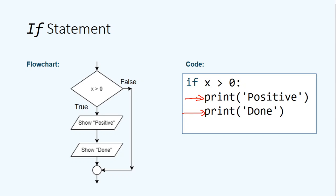By pressing the Tab button, the code is aligned at the same horizontal line. So both print statements will have consistent indentation and belong to the if block. Let's look at another example where the flowchart changes slightly: when the decision is true, it shows positive, but 'show done' is placed after a connector — outside the if block. In the corresponding Python code, print positive is indented under the if statement, but print done is at the same indentation level as the if statement itself.